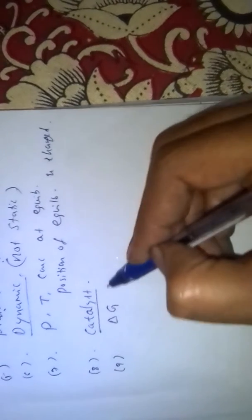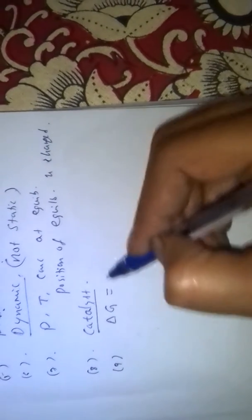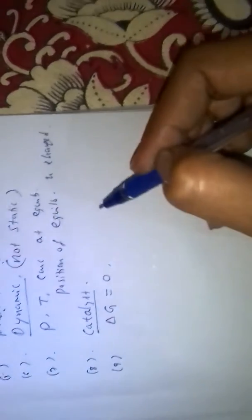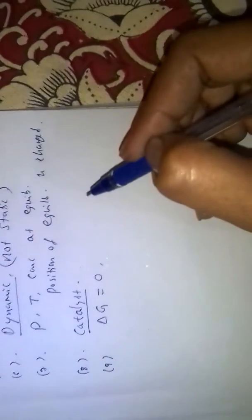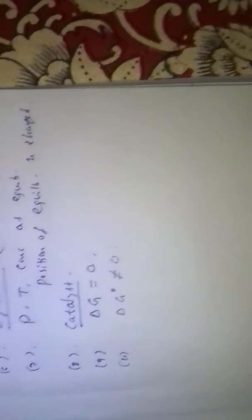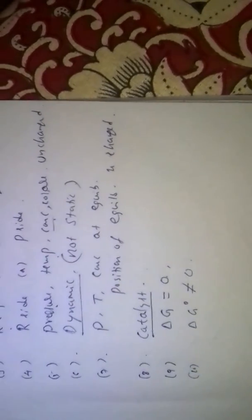The change in Gibbs free energy, the delta G value, is zero for an equilibrium reaction — at equilibrium state, delta G is equal to zero. However, the standard change in Gibbs free energy, the delta G° value, is never zero, even at equilibrium state. These are the characteristics of equilibrium.